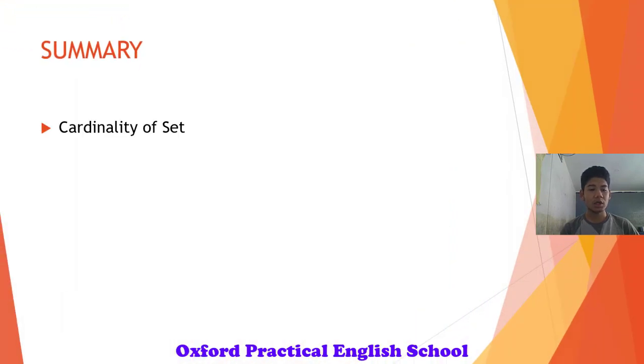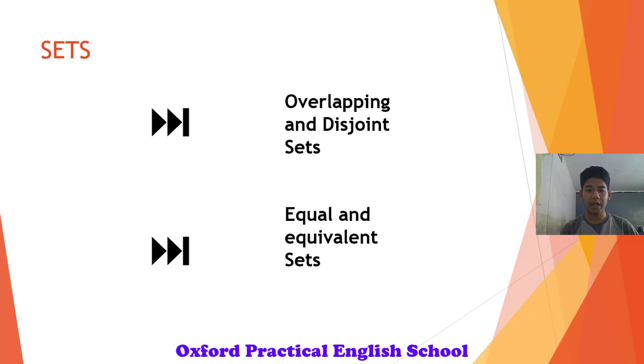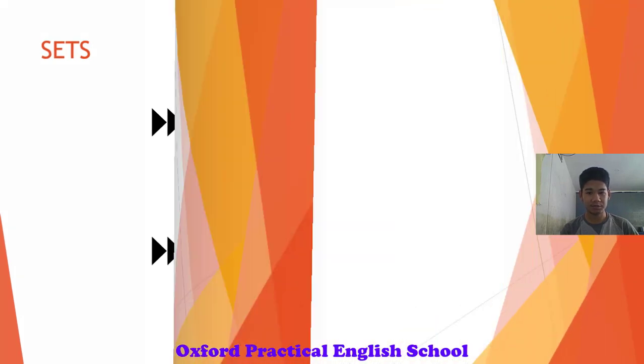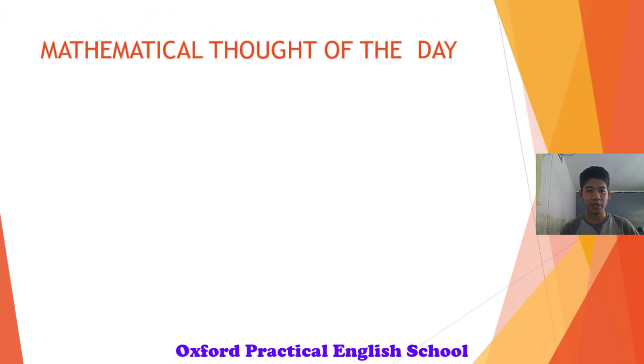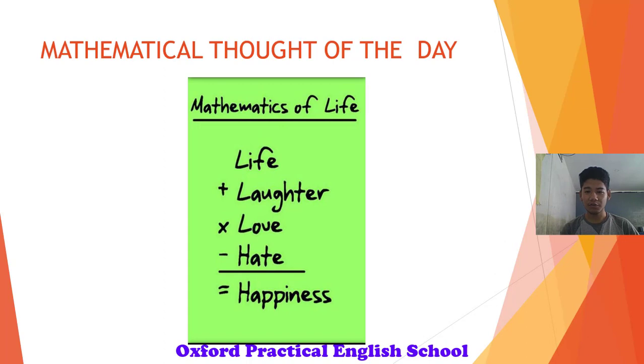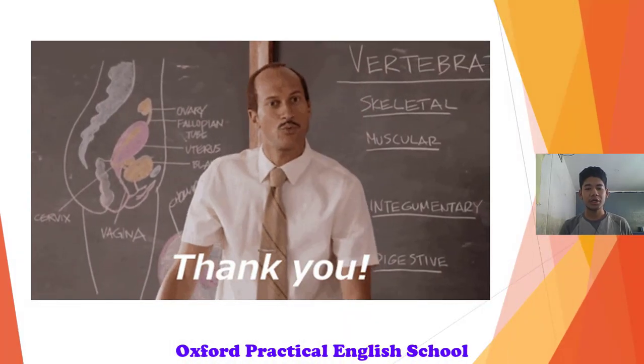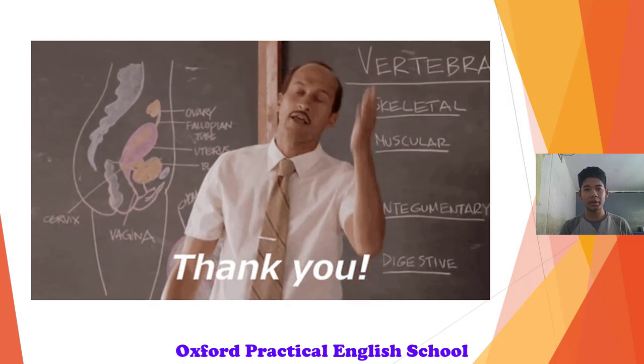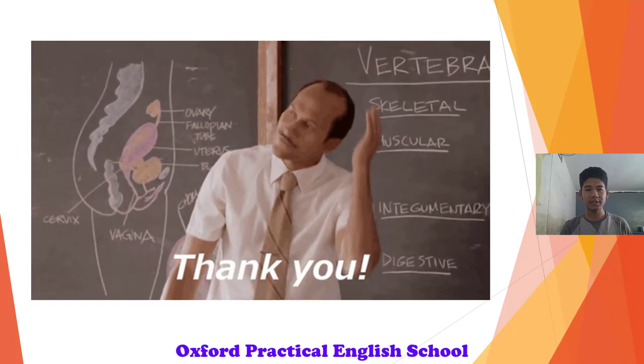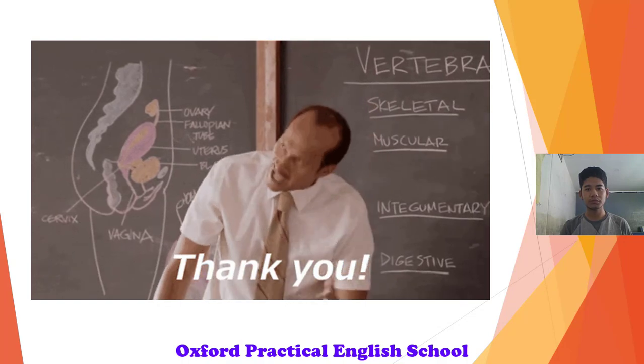So to summarize, we just learned about cardinality of set, finite set, infinite set, null or empty set, and singleton set. In our next class, we will be learning about overlapping and disjoint sets, equal and equivalent sets. So before I end my session for today, I would like to end it with a mathematical thought of the day, which is mathematics of life. In our life, if we add laughter, multiply it by love and deduct hate from it, our life will be equal to happiness. Thank you very much for joining this video. If there are any queries and if there is anything I need to improve, please comment down below. And don't forget to subscribe for more videos like this and hit the bell icon for more updates from Oxford School. Thank you very much.